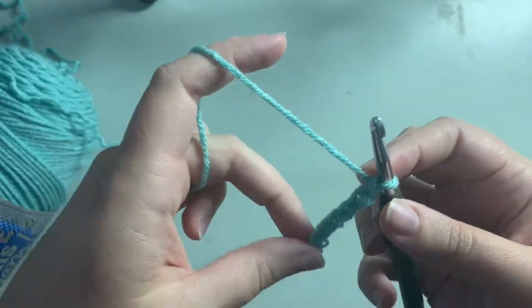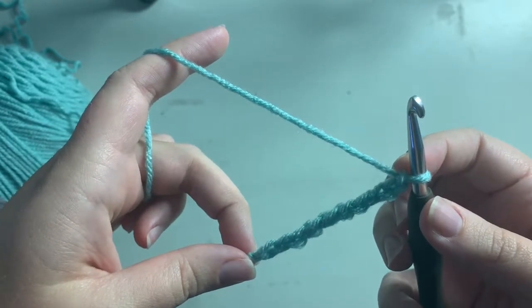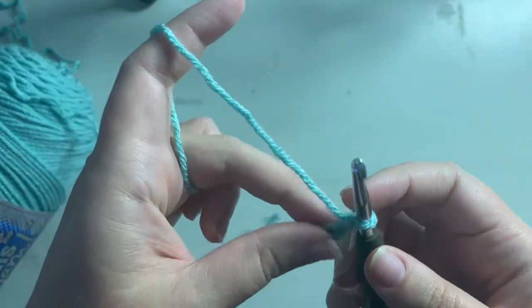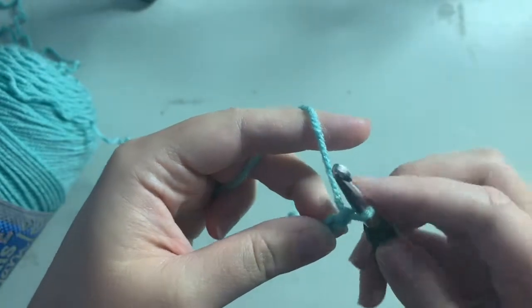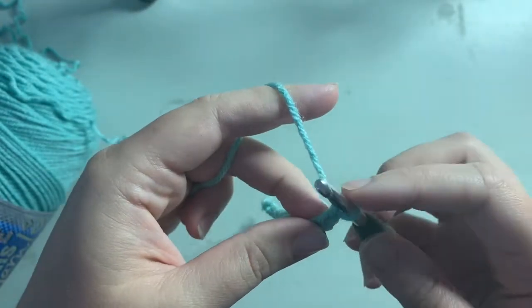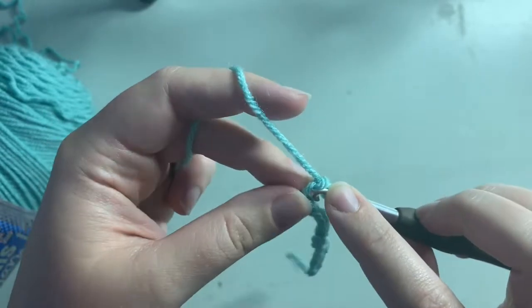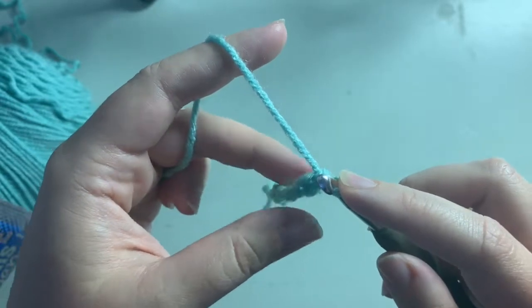So now what we're gonna work on is single crochets. Since we're working on a shorter stitch, we're gonna skip this first chain, which is kind of tight already anyway, and we're gonna work into this next chain.